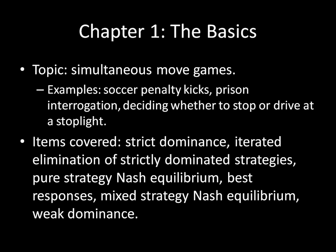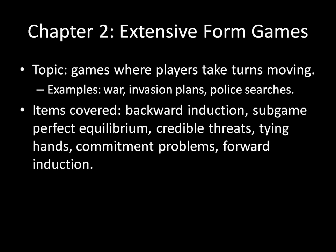In chapter two, we're going to move on to what we call extensive form games. This is the opposite of what we were doing earlier — instead of everyone making their moves at the same time, the players are taking turns moving. Some examples here are war and invasion plans and police searches. That gets to what I was talking about before, where I have to decide whether to allow the police officer to search, and then he decides whether to conduct a really thorough search or a simple one. The items we'll cover in this chapter are backward induction, subgame perfect equilibrium, credible threats, tying hands, commitment problems, and forward induction. I don't expect you to know any of that coming in, but by the end of chapter two, you will have those things down.